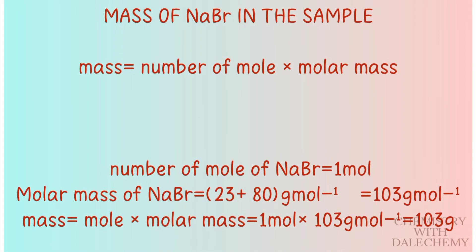The mass of sodium bromide in the sample — we already know that mass equals the number of moles multiplied by the molar mass. From the question, the number of moles of sodium bromide was given to be one mole. The molar mass of sodium bromide was calculated to be 103 grams per mole. So the mass equals one mole multiplied by 103 grams per mole, giving 103 grams.